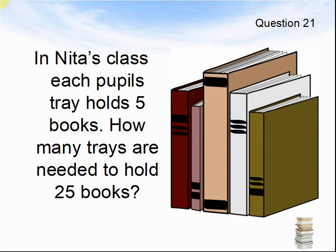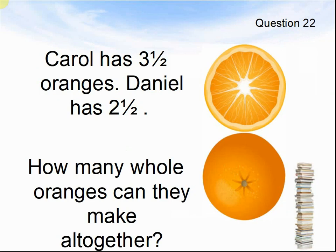Here comes question 22. Carol has 3 and a half oranges. Daniel has 2 and a half. How many oranges can they make all together? Pause the video until you are ready for question 23.